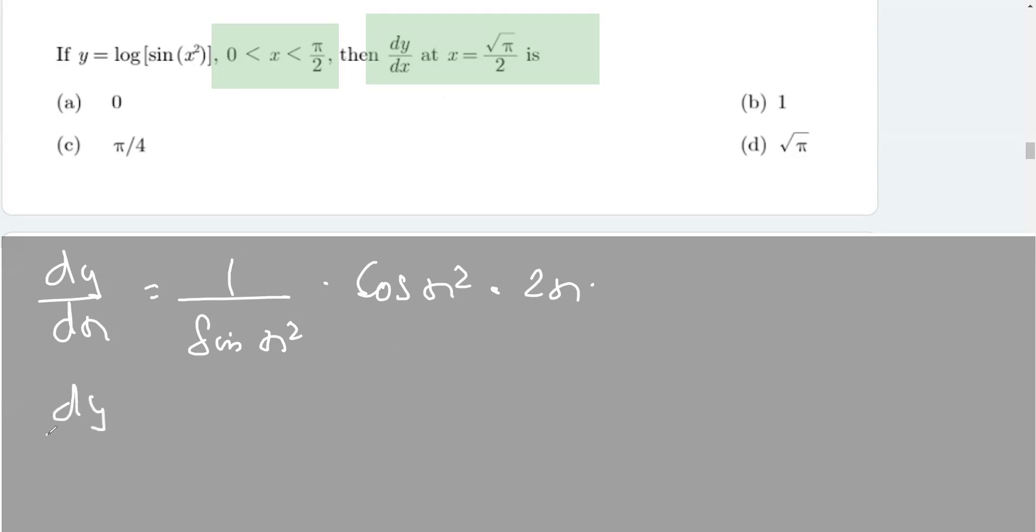So now we can simplify. dy/dx comes out to be 2x, and cos over sin is cot. So it will give you 2x cot x squared.